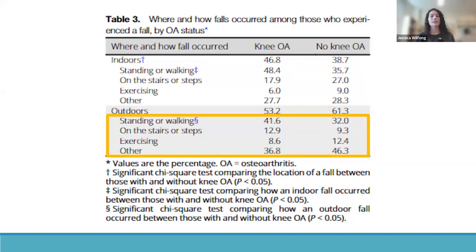For outdoor falls, individuals with knee OA were significantly more likely to report falling while standing or walking. Those without knee OA were most likely to report exercising or an 'other' reason — which for outdoors includes falling on snow or ice. We suggest these latter activities may be ones that someone with knee OA exercises greater caution with or avoids altogether. Importantly, those with knee OA were only significantly more likely to have an injurious fall while doing very basic physical activity — standing or walking — which is truly the only unavoidable activity on the list.